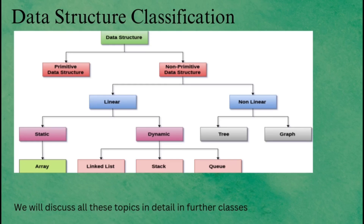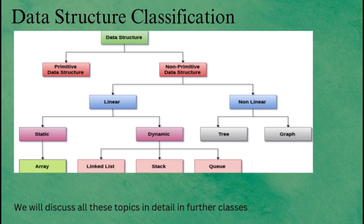Non-primitive data structures are further classified into linear and non-linear structures. Linear data structures organize data in a straight line — you access each element one after the other. Non-linear data structures allow elements to connect in more complex ways, like branches on a tree. Linear structures are classified into static and dynamic. Static means the data is fixed, like an array where you set the number of elements at the start. Dynamic means the size can change as needed — examples include linked lists, stacks, and queues. For non-linear structures, we have trees — like a hierarchy or family tree where data branches out from a root — and graphs, which show relationships between different nodes, like how cities are connected by roads.